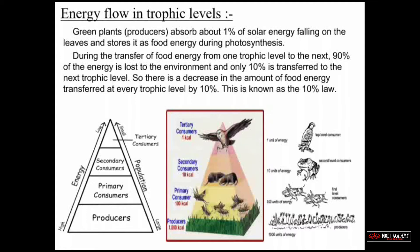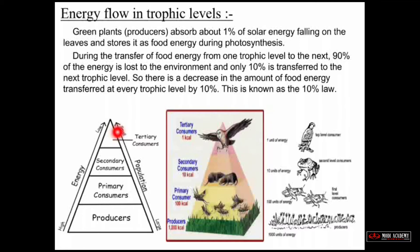This is known as the 10% Law. When producers use 1% of solar energy to make food, only 10% transfers to primary consumers; from primary to secondary consumers only 10% transfers, and the rest 90% is wasted into the environment. As the number of trophic levels increases, energy keeps decreasing, which is why this is called the 10% Law.